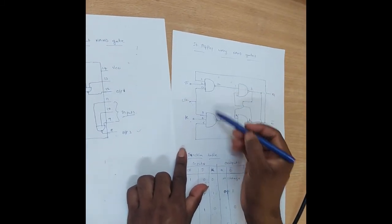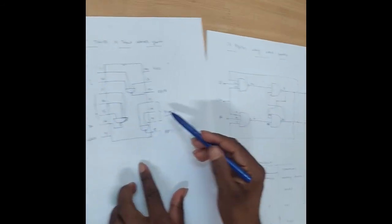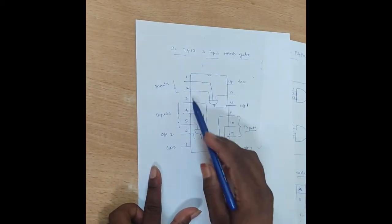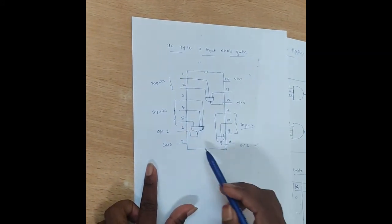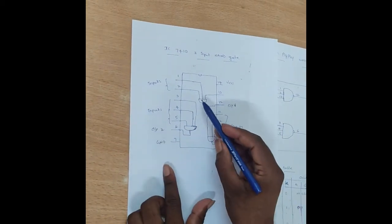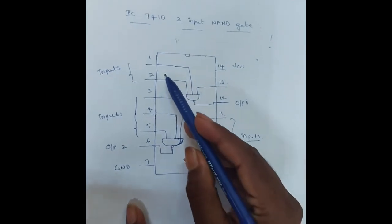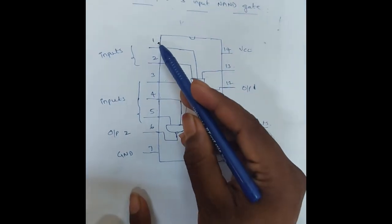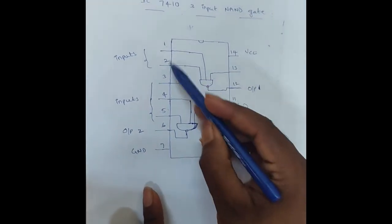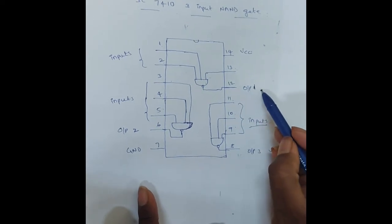The IC number is 7410. This is the pin diagram of the 3-input NAND gate. It contains a total of 14 pins. Pins 1, 2, and 13 are the inputs and the 12th pin is the output.